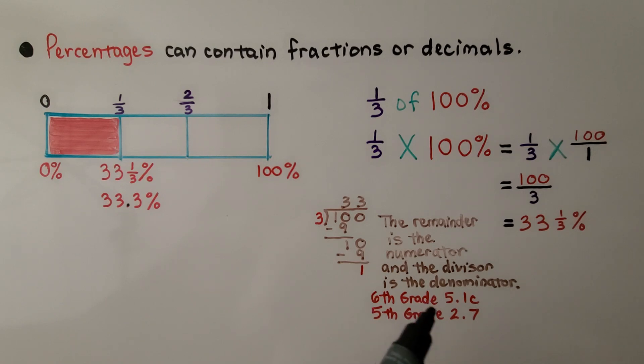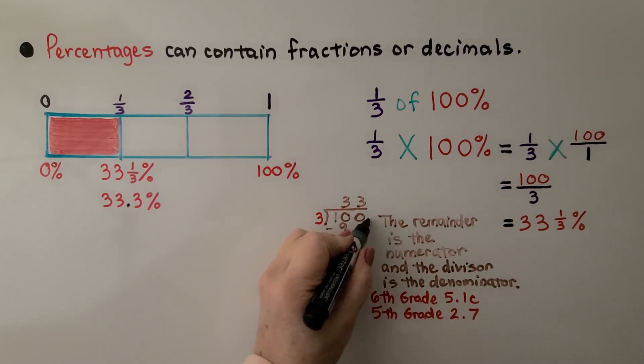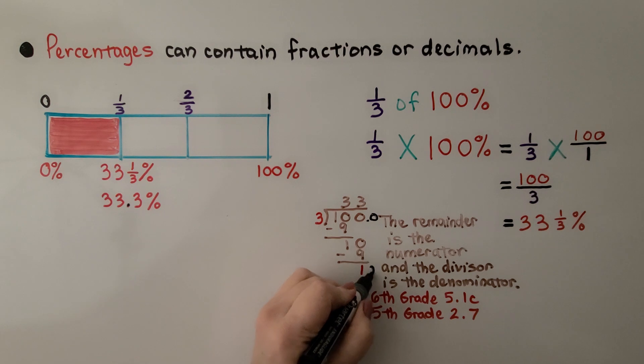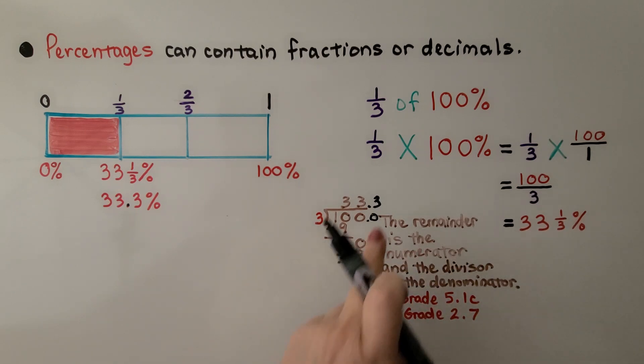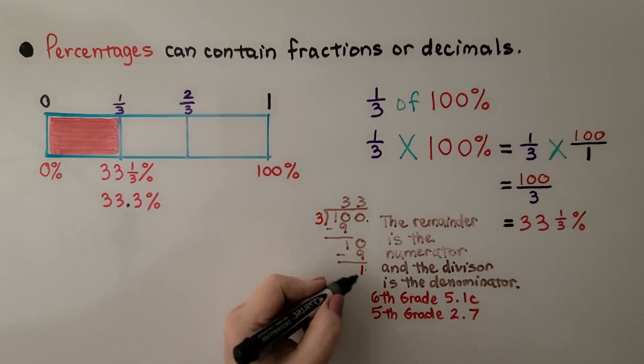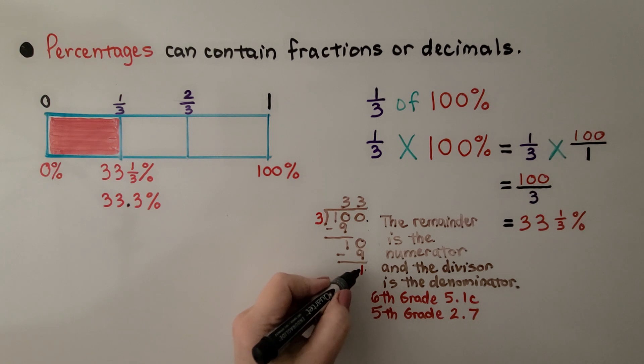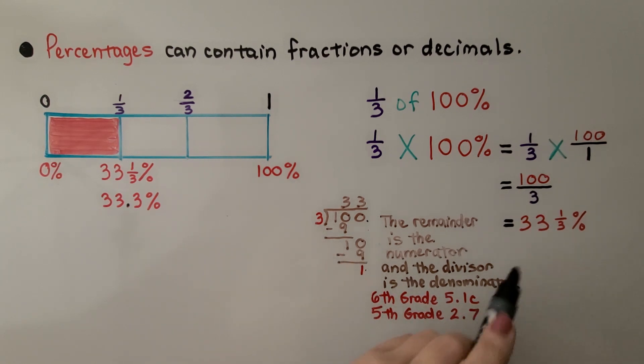We learned in lesson 5.1c, which I'll have linked in this description, that we can just stop because I could add a decimal point here and another zero and then bring it down and say 3 goes into 10 again. And then we'd have a .3 here, and we could just keep going and going and going. But if we stop, as we learned in lesson 5.1c, we can use the remainder as the numerator and the divisor as the denominator, and we'll have 33 and one-third percent.